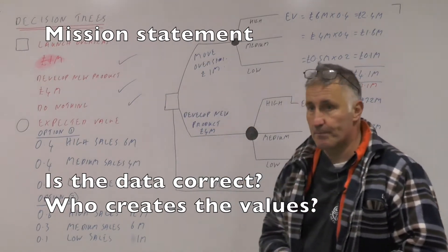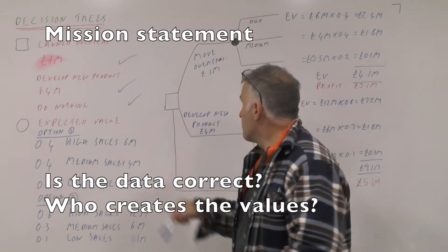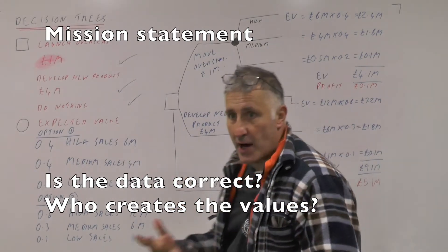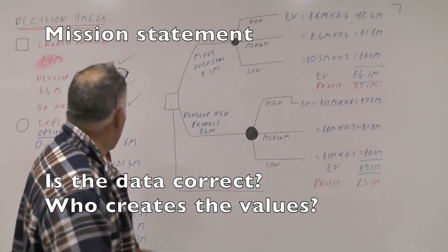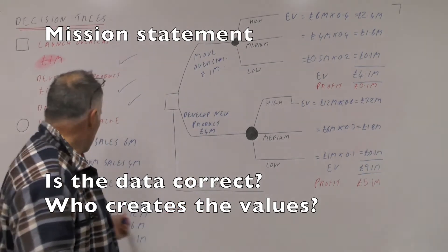If you move overseas, you could be making £6 million per year. On medium sales, you'd be making £1.6 million, and on poor sales you're going to make £0.5 million.